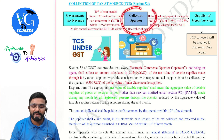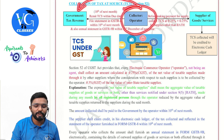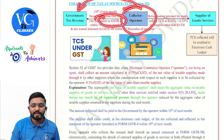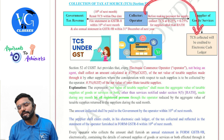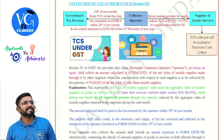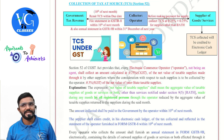Whatever TCS has been collected by the collector and deposited to the government — once he files GSTR-8 — it will immediately be auto-credited to the supplier in his electronic cash ledger.